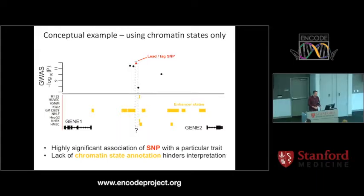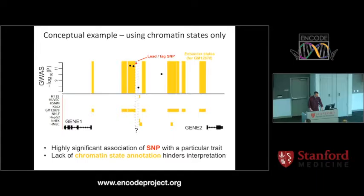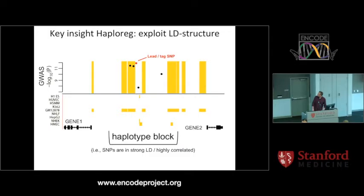What you can do is use chromatin state data from ENCODE or from Roadmap, and overlay that with this region for a number of different cell types. Then maybe you can find that your SNP of interest, your red SNP, is actually inside an enhancer region, for example.